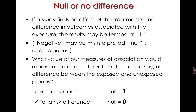What value of our measures of association would represent no effect of treatment — that is, no difference between the exposed and unexposed groups? For a risk ratio, the same incidence in the exposed divided by the same incidence in the unexposed gives a ratio of one. So if there's no difference between groups, the null value for a ratio is one. Whereas if you're subtracting two quantities that are the same, the null value is zero. So for a risk difference, the null is zero.